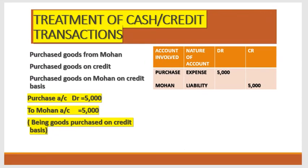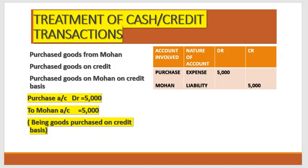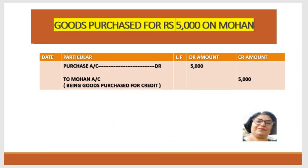अब हम देखते हैं कि जो उधारी की transaction है उसको हम किस तरह से record करते हैं। 'Purchase goods from Mohan for ₹5,000', 'purchase goods on credit for ₹5,000', 'purchase goods from Mohan on credit basis' — यहाँ पे purchase account debit to Mohan account credit। Purchase हमारा expense है, अगर expense बढ़ता है तो debit कर दो। Mohan से उधारी पे खरीदी है, तो Mohan हमारे लिए creditor है, जो कि हमारे लिए liability है। Liability बढ़ जाती है तो उसको credit column के अंदर डाल देना है। Journal entry: Purchase account debit to Mohan — debit column में purchase के सामने 5,000, credit column में Mohan के सामने 5,000। Narration: 'Being goods purchased on credit from Mohan.'